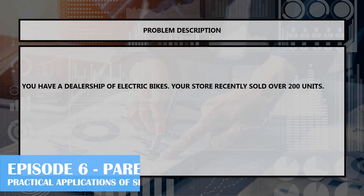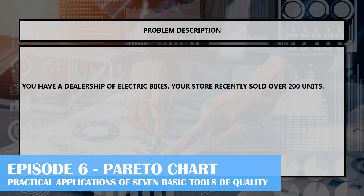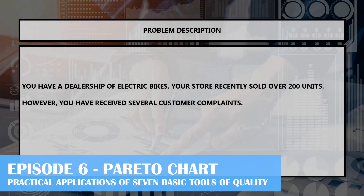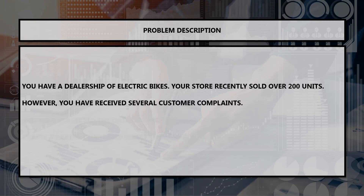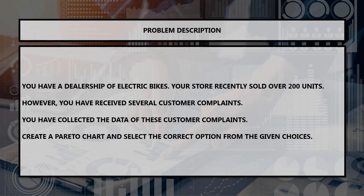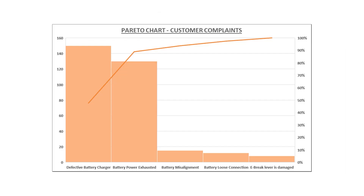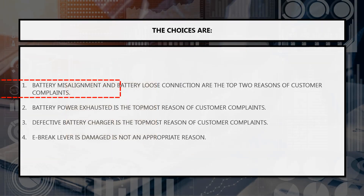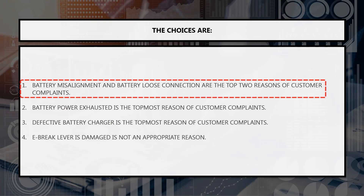You have a dealership of electric bikes. Your store recently sold over 200 units. However, you have received several customer complaints. You have collected the data of these customer complaints — create a Pareto chart and select the correct option from the given choices. The first option is battery misalignment and battery loose connection are the top two customer complaint reasons.